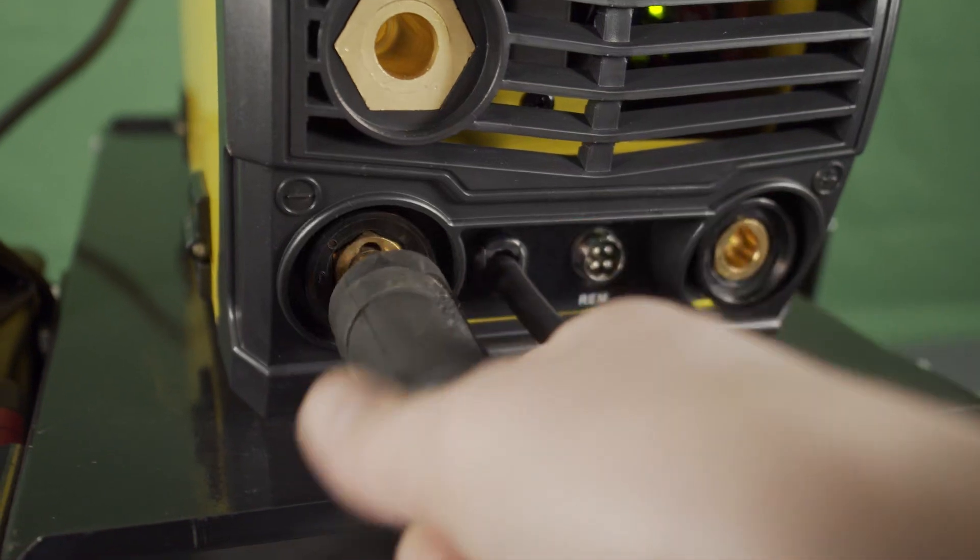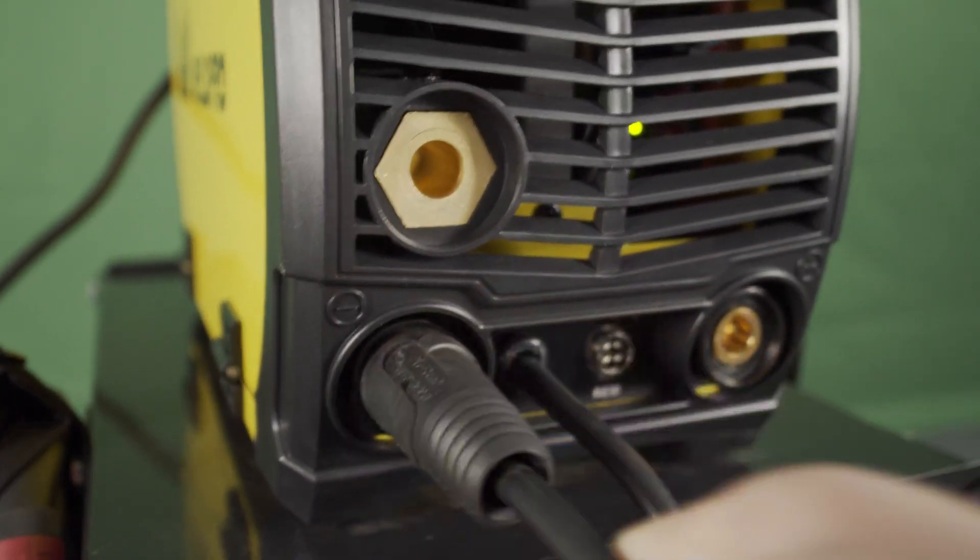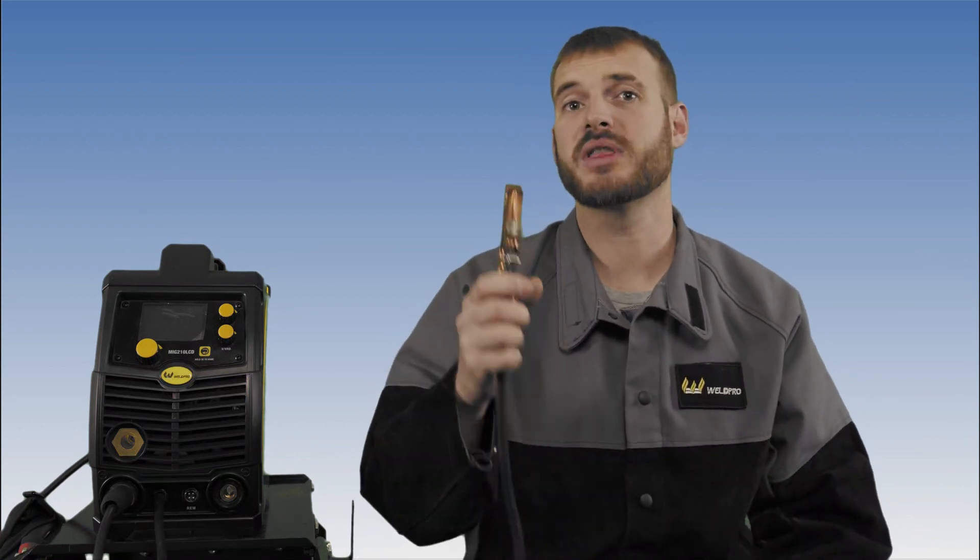Go ahead and insert the DENS connector into the negative terminal. Rotate clockwise about 90 degrees. This will ensure a secure connection. Go ahead and connect your ground clamp to your workpiece. Make sure it's clean and you get a good connection. Grounding is one of the most important things when it comes to any welding process.